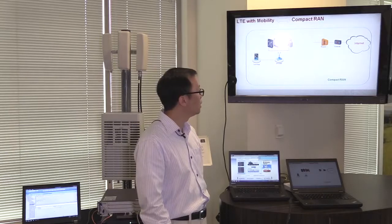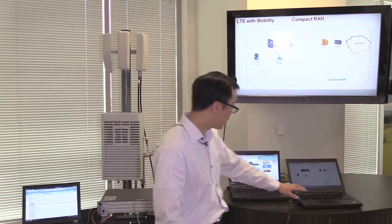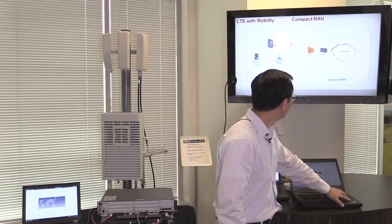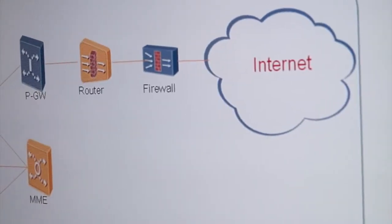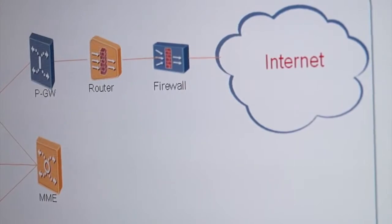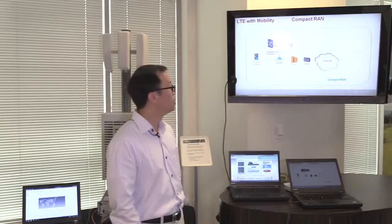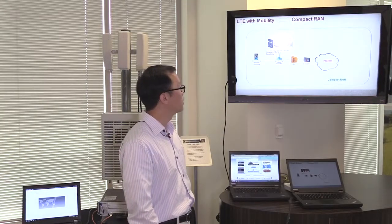So the eNodeB is still an LTE eNodeB. However, it's more than that. It included a lot of the EPC functions. Then, this Compact RAN eNodeB is connected to the router and the firewall, and then it goes to the internet. This is essentially what it is. The eNodeB with integrated core functions.